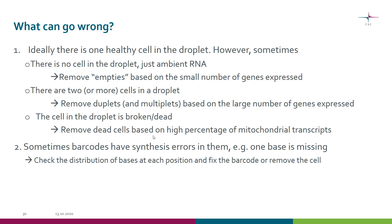It's important to be aware that sometimes things don't go perfectly. Ideally we want one healthy cell per droplet, but sometimes there is no cell — just some RNA floating around. We would still get some reads, but the number of genes detected would be very low, so we call that an empty and remove it. It can also happen that two or more cells land in a droplet. Doublets or multiplets are detected by an unusually large number of genes expressed compared to the average, and they are removed.